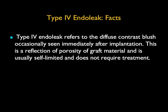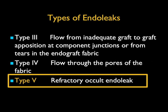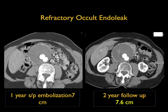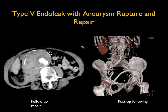Type 4 endoleaks are a diffuse contrast blush occasionally seen immediately after implantation — usually a reflection of porosity of the graft material and usually self-limited. We don't see this very often. Type 5 is the refractory occult endoleak, and those can be catastrophic. Here's a good example: there's an aneurysm getting larger — from 7.6 cm — and on follow-up you see active bleeding. It's something to be aware of, particularly early, as patients with enlarging aneurysms need procedures. You don't want a patient rupturing their aneurysm — morbidity and mortality are going to be incredibly high.